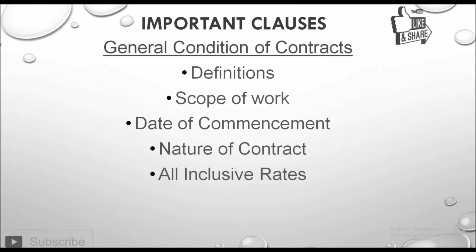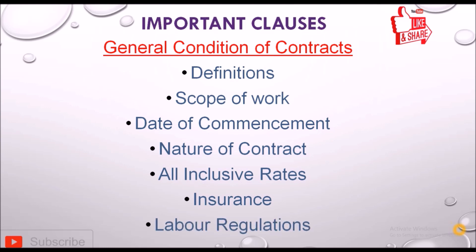The nature of contract defines whether it is a lump sum contract or a cost-plus contract. Next is all-inclusive rates — we define whether the rates are inclusive or exclusive of taxes. Next is insurance: the contractor will provide all-risk policies and any other insurance required. We define who is responsible for insurance — whether it is the contractor or the client.